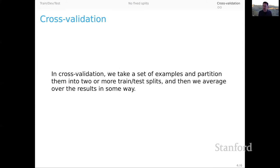So cross-validation in this context, we take a set of examples, say our entire data set, and we partition them into two or more train test splits. And you might do that repeatedly and then average over the results of evaluations on those splits in some way to give a holistic summary of system performance.